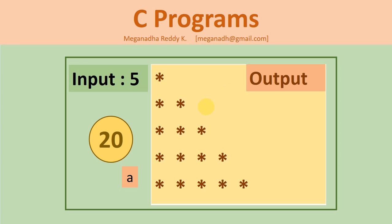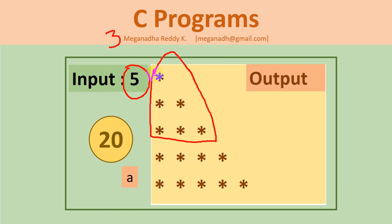Hi, this is Magnath. In this video we're going to learn how to print output in a star pattern format. The input is the number of rows to be printed. If we enter 5, we need to print 5 rows in this pattern. If the input is 3, we need to print up to 3 rows in this pattern. So let's get started and write the program.